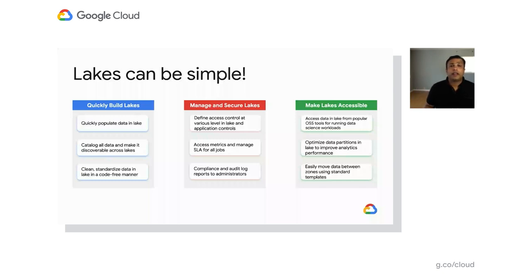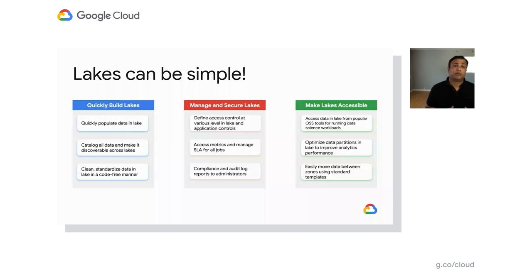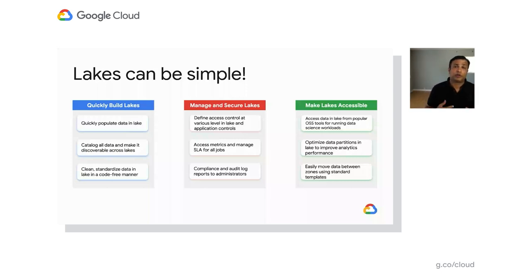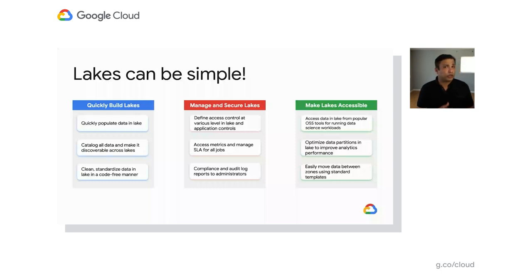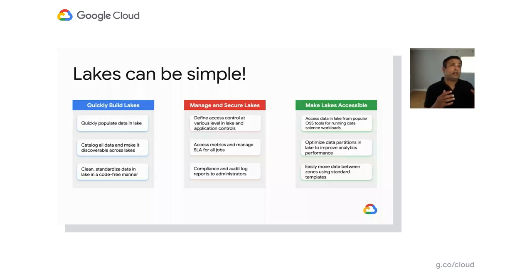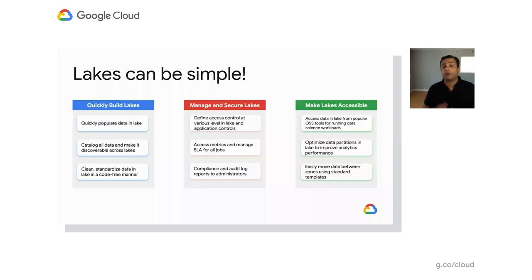The data also has to be smartly partitioned. As there are various tools and optimization needs, the data must be partitioned in a way that integrates seamlessly with all different tools. There also needs to be a standardized way of moving data between zones within the lake — for example, moving data from a curated zone directly into your data warehouse. Having that built-in ability to connect with the outside world is extremely critical for making the lake successful.